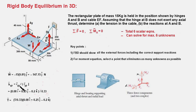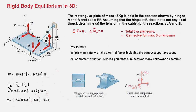The position vector r_EF is determined by moving from E to F: 0.08 m along x, −0.2 m along z, and 0.25 m along positive y. The magnitude is the square root of the sum of squares, which works out to 0.33. The tension force T equals the magnitude of T multiplied by the unit vector λ_EF, giving us the tension vector.